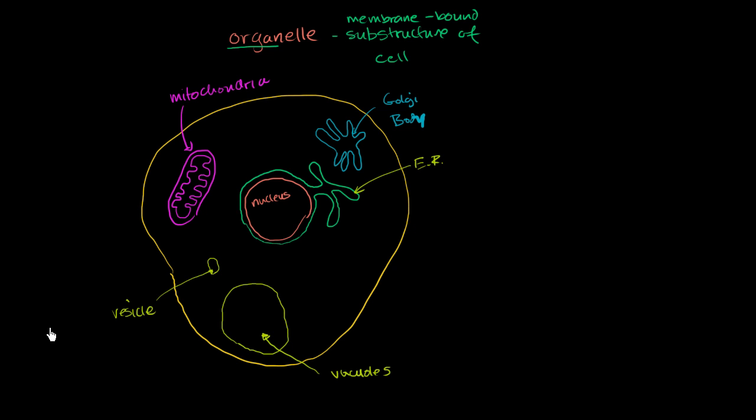In plants, you have plastids. And the most famous, or at least from our point of view, the most famous of these are chloroplasts, where photosynthesis takes place, where you're taking light energy and turning that into chemical energy in the form of sugars.